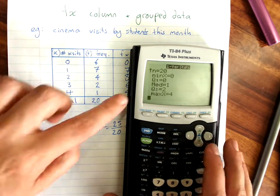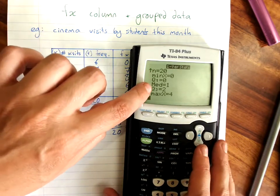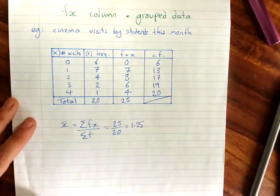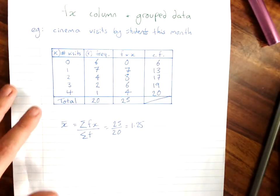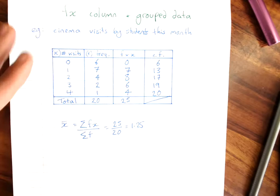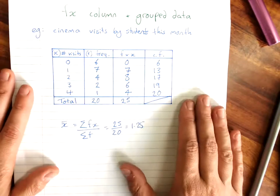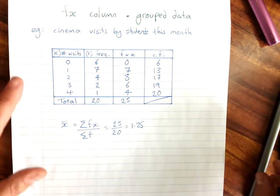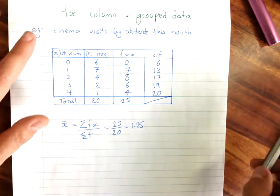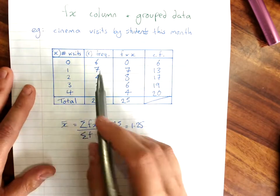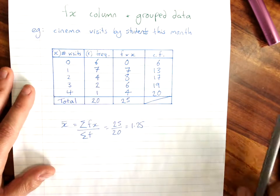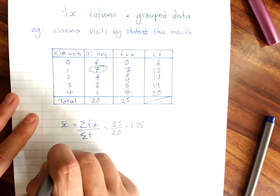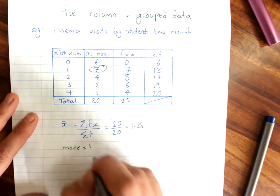It also — scroll down — gets the median and the five-number summary. Using the frequency table, you can of course also find the mode: that is the score with the highest frequency. So the mode equals 1.